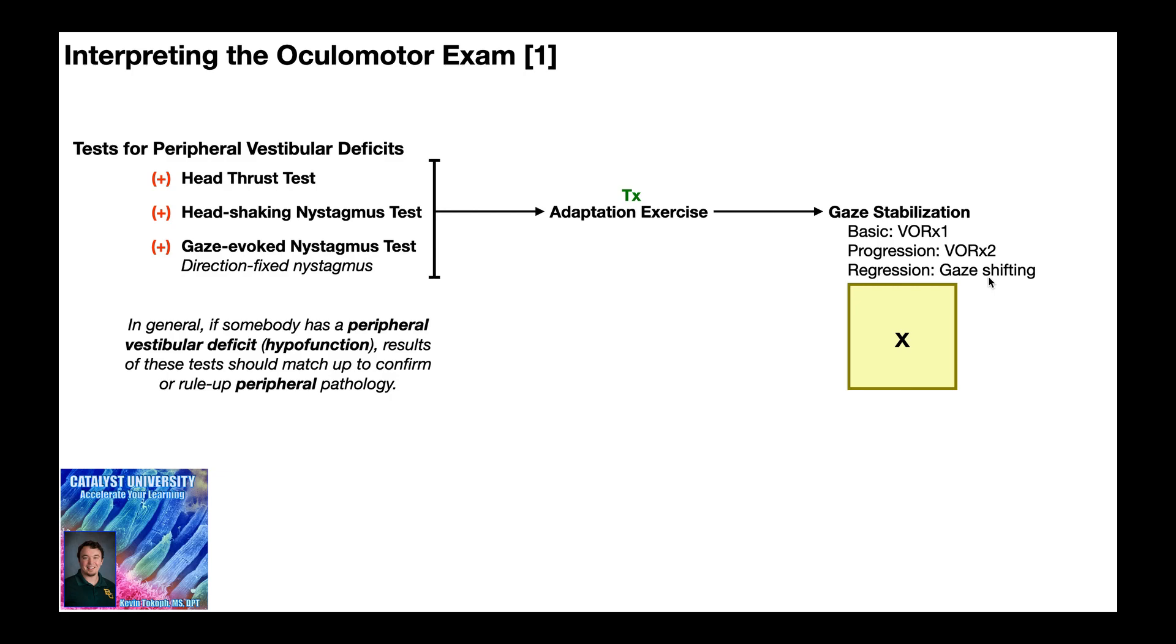And then the second case it's given is when the person has such impaired gaze stabilization that they cannot keep that visual target, the X, in focus during the VOR times one, even at slow rates. And so you have to regress it to gaze shifting. And again, we'll talk about all those in the next two videos.